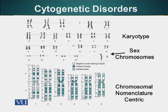Chromosomes are metacentric when the centromere is in the center of the chromosome. If the centromere is not exactly at the center, the chromosome has two arms — the P arm, P meaning petite, and the Q arm, which is the next letter in the alphabet. If both arms are of the same length, the chromosome is metacentric.